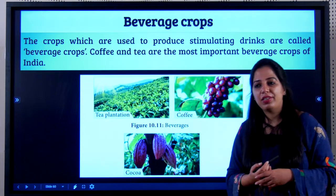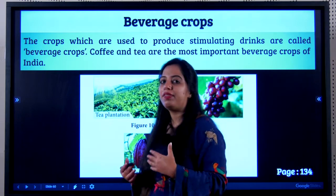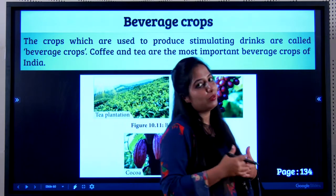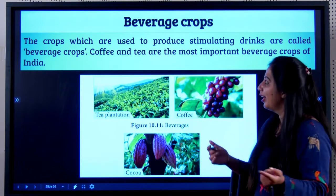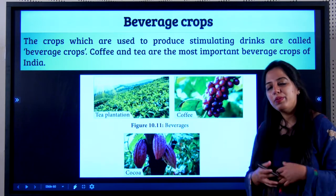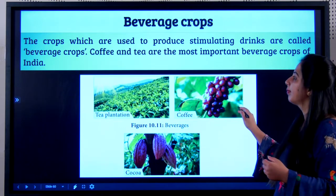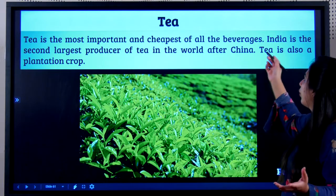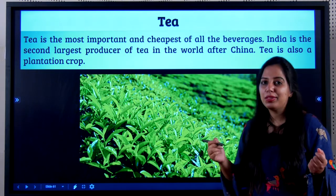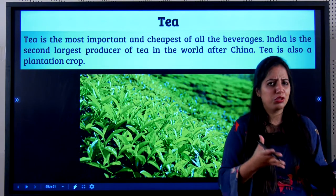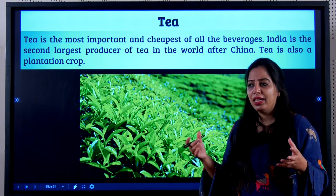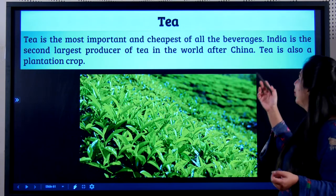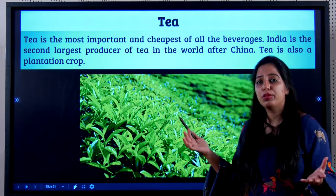Now let's talk about beverage crops. Beverages are drinks we have on an everyday basis — tea and coffee. Tea is the most important and cheapest of all beverages. Tea is a tropical and subtropical crop requiring high temperature of 21 to 30 degrees Celsius and heavy rainfall of 150 to 250 cm. India is the second largest producer of tea in the world, after China.